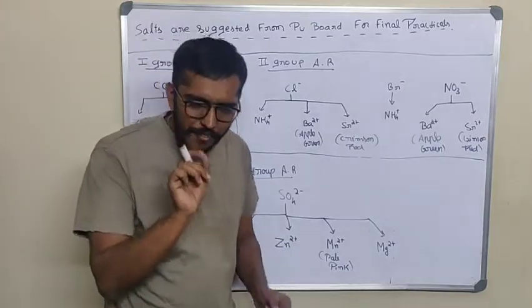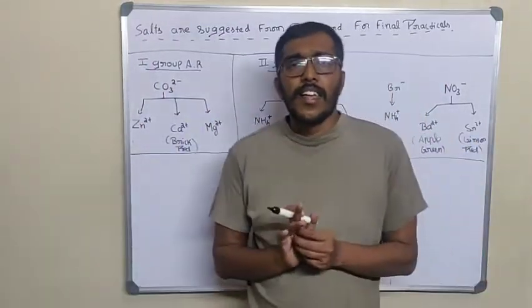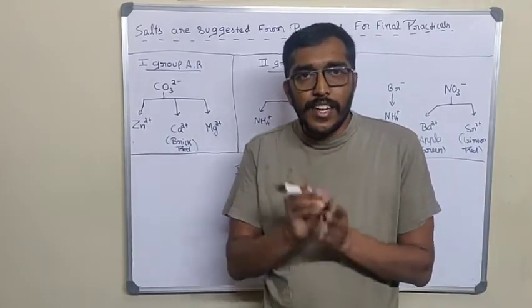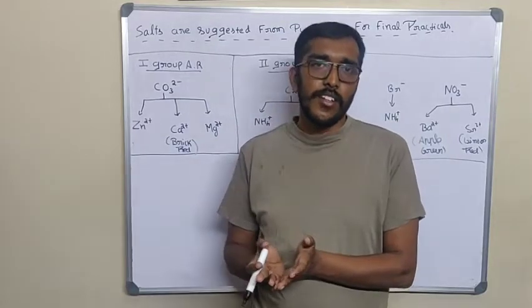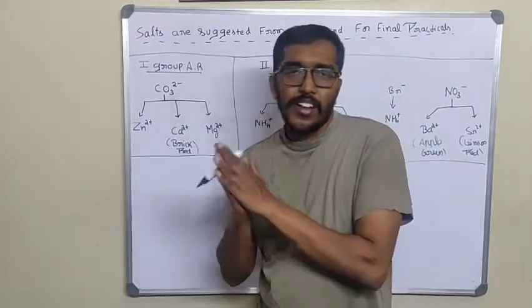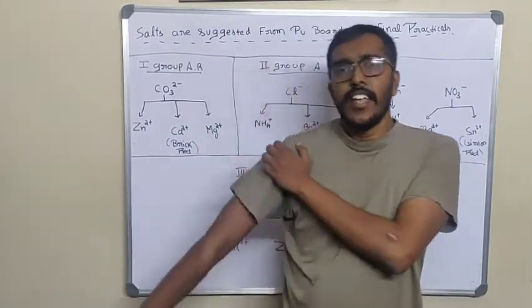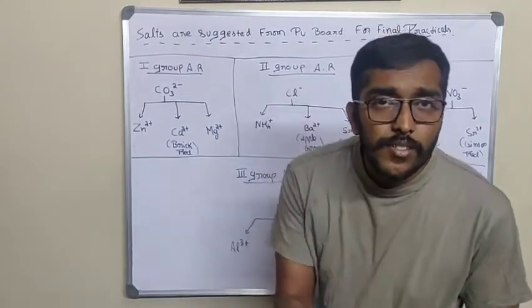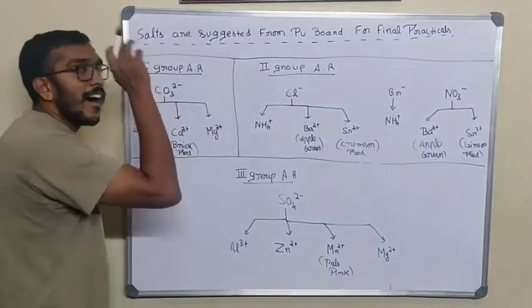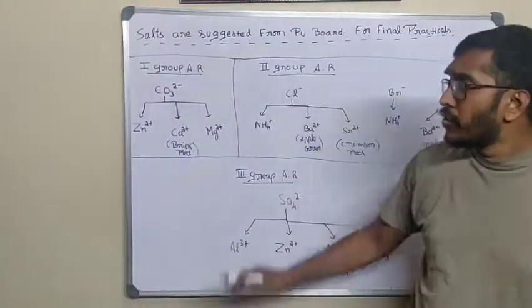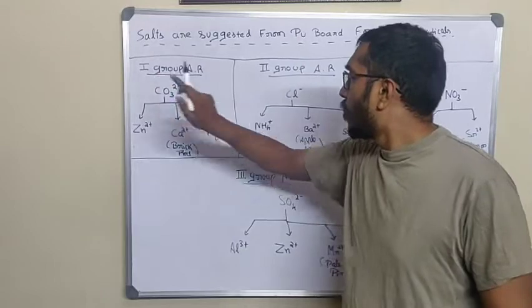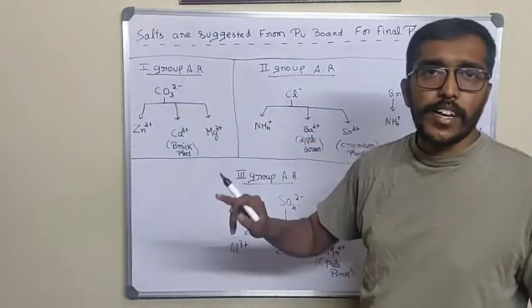First, you have to know the preliminary test. Whether it is crystalline or amorphous. We will just check it. Powder, it is amorphous. Rough surface, it is crystalline. So amorphous, it is a carbonate. Carbonate according to the PU board. You have to know zinc carbonate, calcium carbonate, and magnesium carbonate.